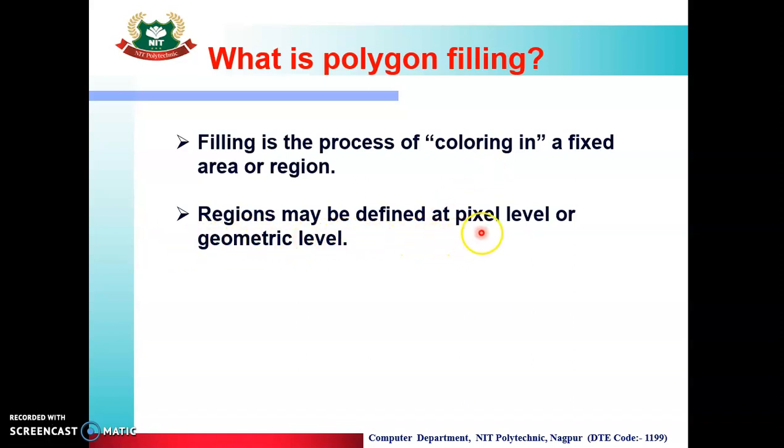Regions may be defined at pixel level or geometric level. So if we want to fill a polygon, means color the polygon's area or region, we can fill it pixel by pixel or fill the complete polygon at a time by using another method, that is scanline method. So, these are the classifications of how we can fill the polygon.